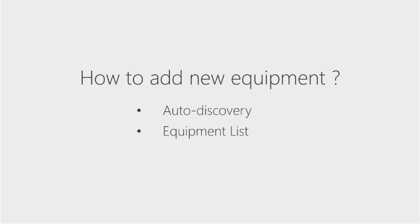There are two ways to add new equipment to the system. One is through auto discovery and the other is through equipment list. The auto discovery allows you to search SNMP devices within the specific IP range and add them to the system directly.